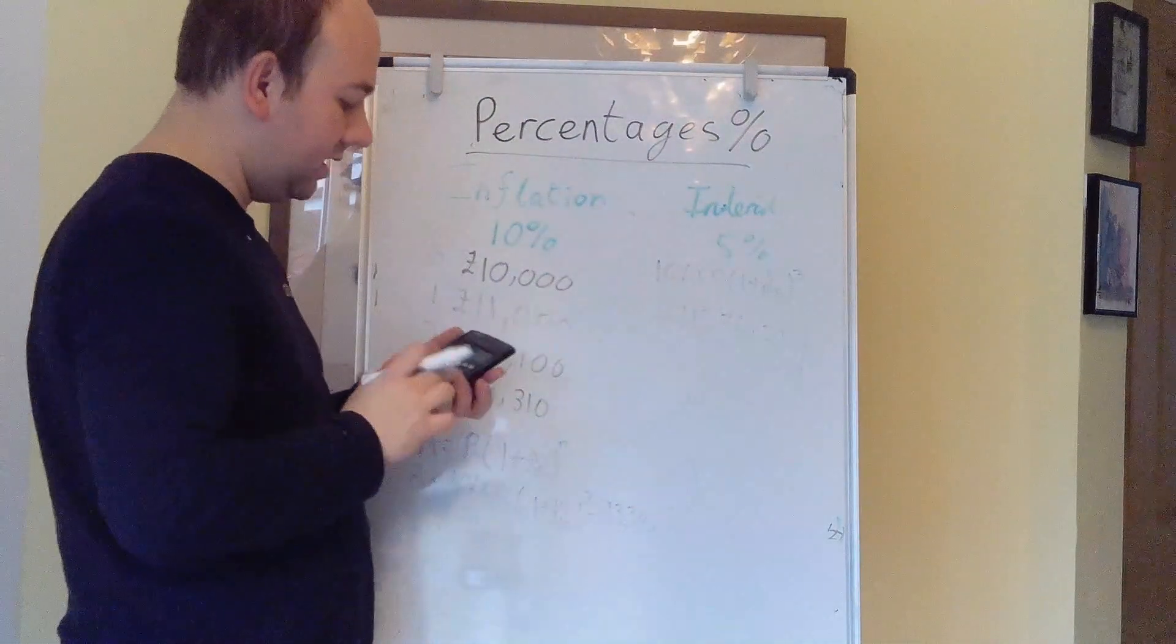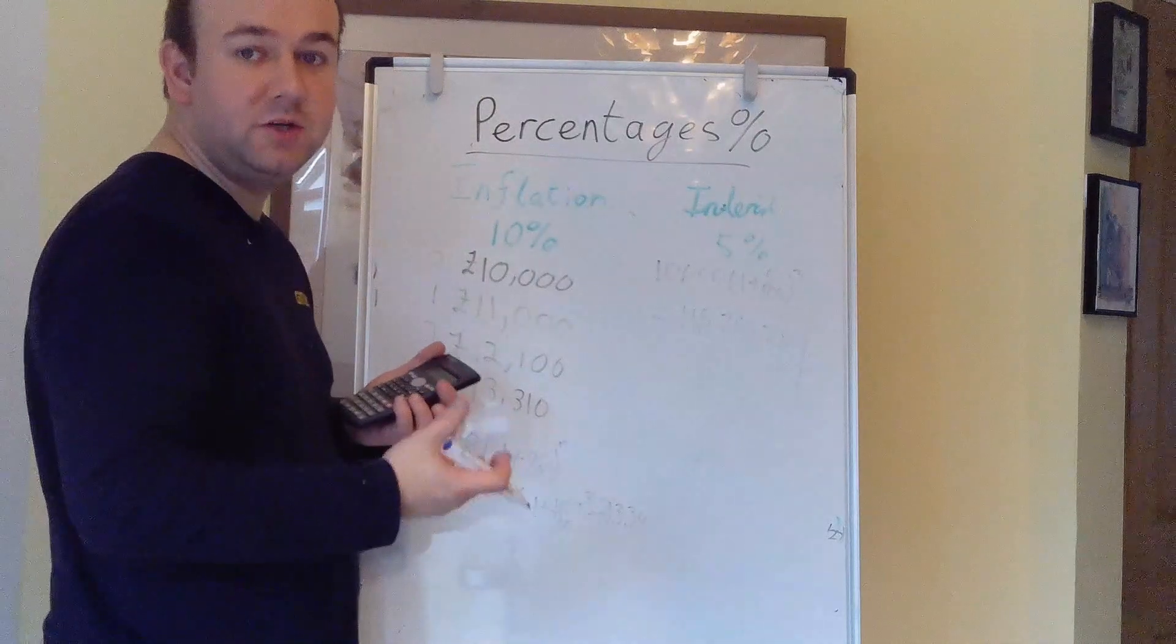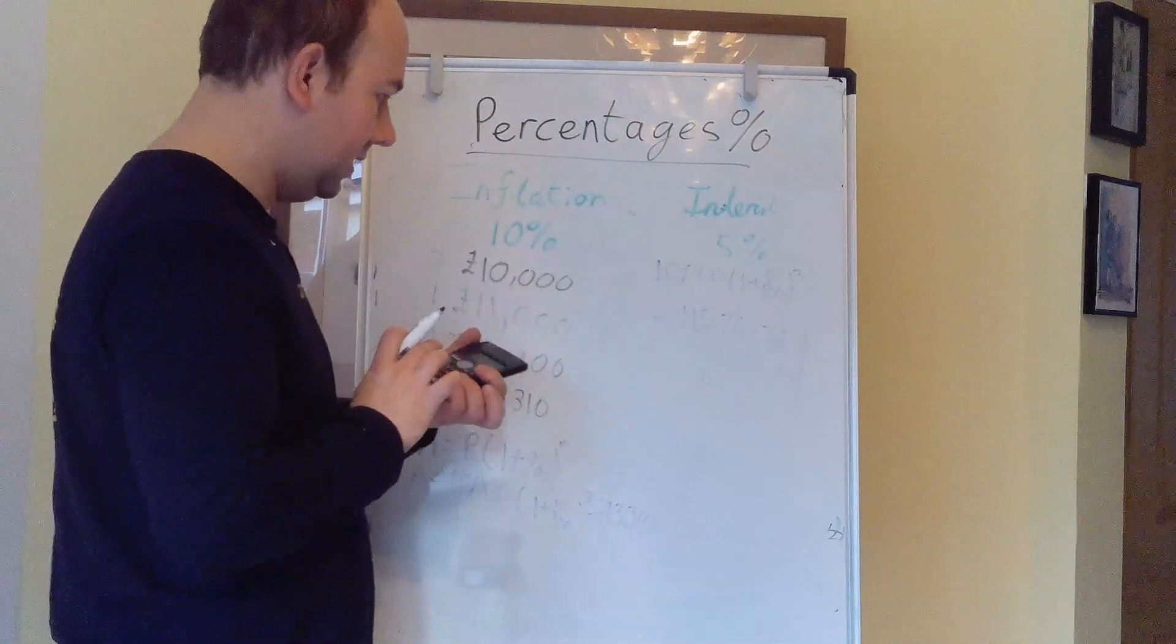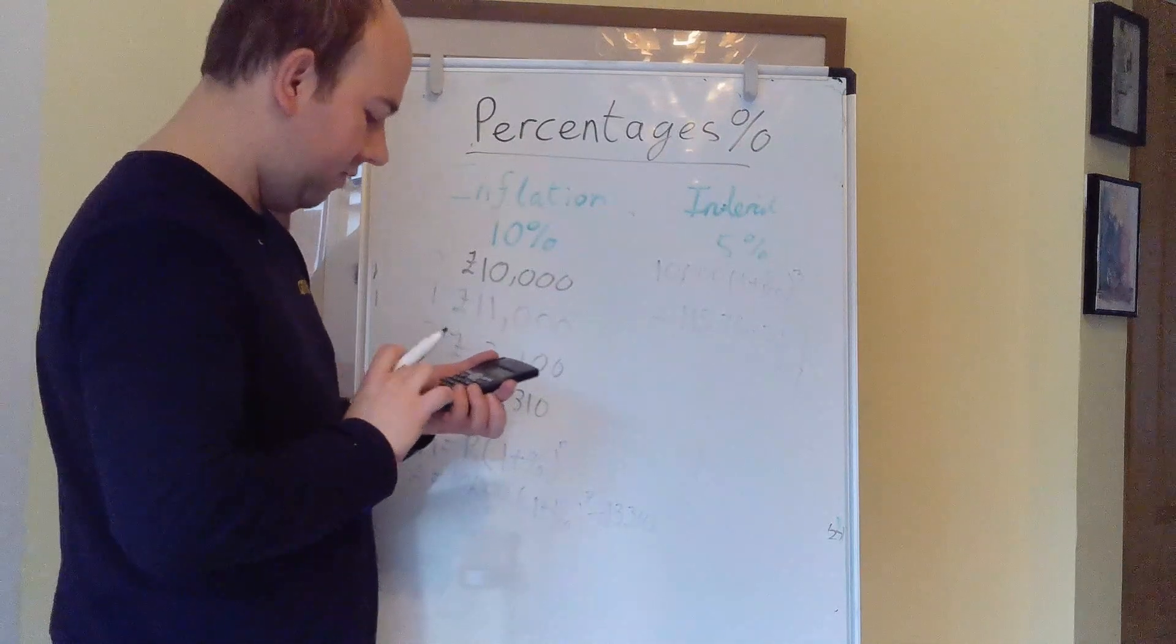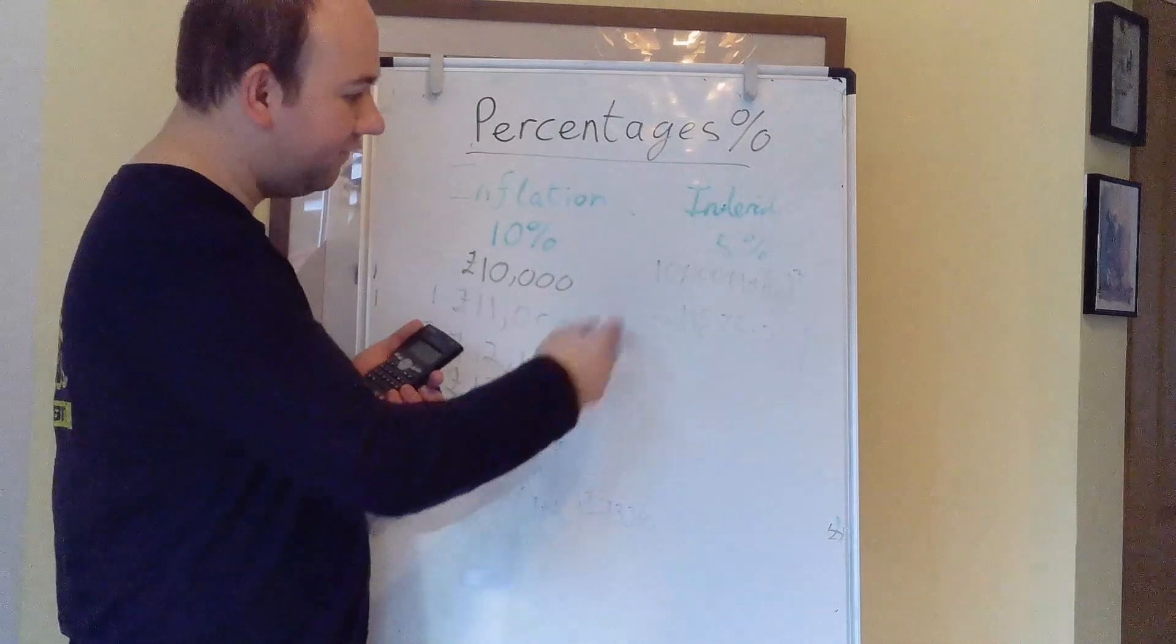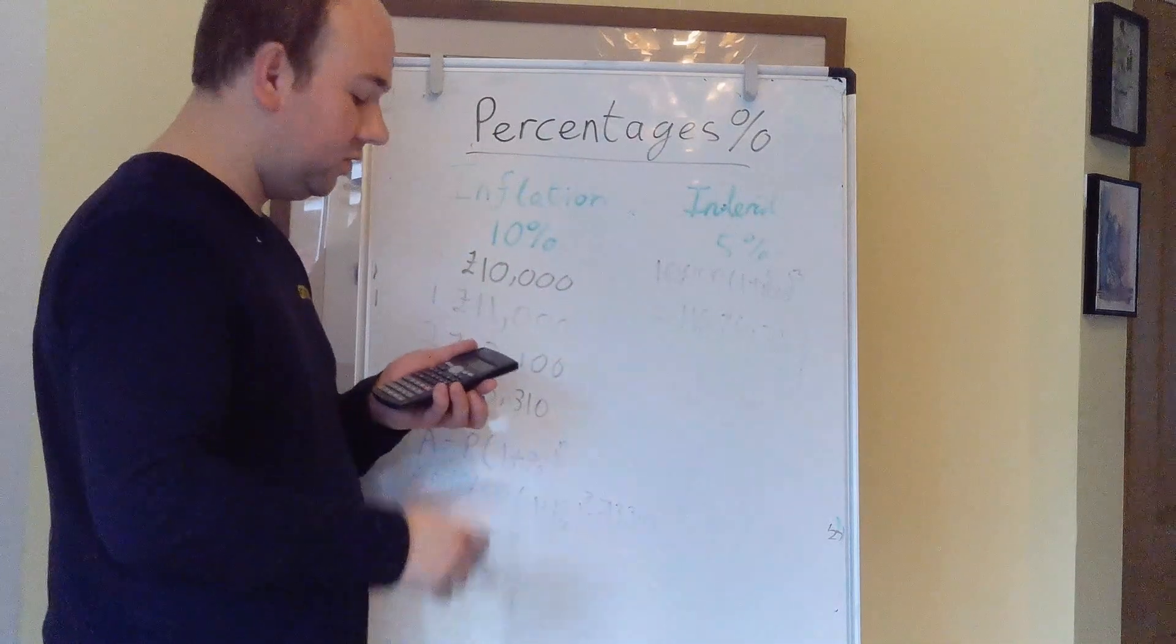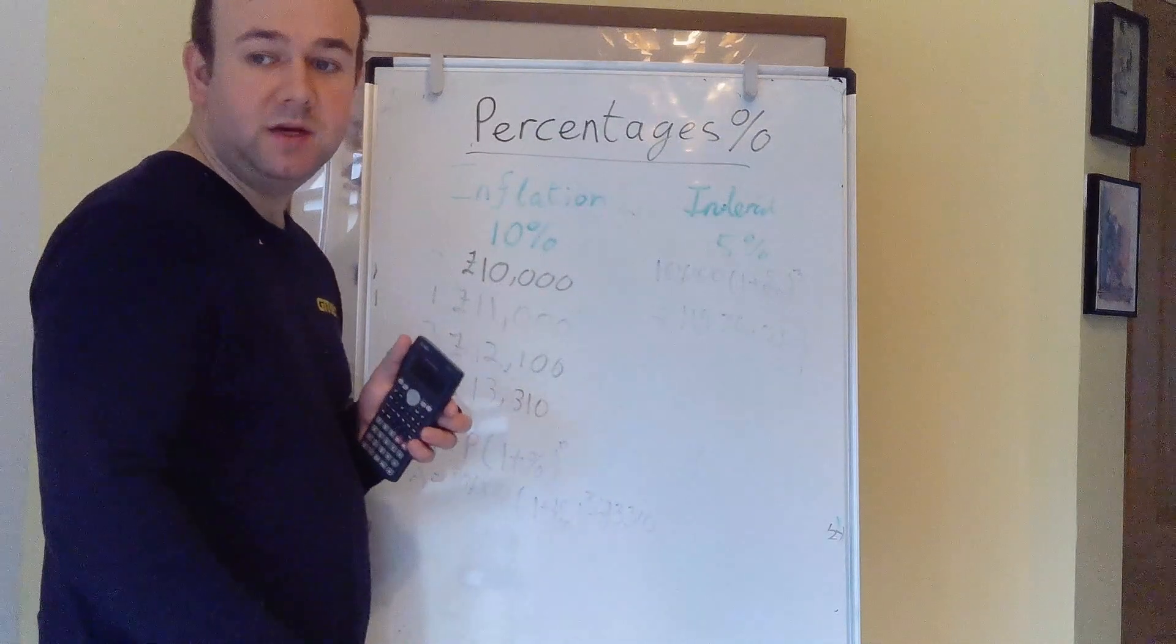Which you can see is significantly lower than the quantity that you need, or the amount of money you need to buy those 10,000 Mars bars. If we find the difference between that, you would need to find from somewhere an extra £1,733.75 to purchase your 10,000 Mars bars.